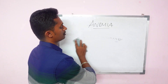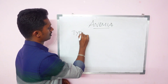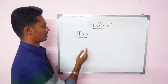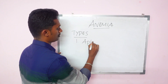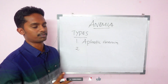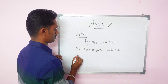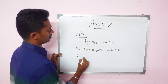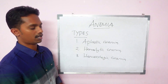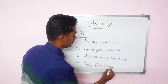So this is what anemia is. Now let's look at the types of anemia. Based on etiology, we can classify anemia. The first major type is Aplastic Anemia, then Hemolytic Anemia, next Hemorrhagic Anemia — which is related to bleeding — and Iron Deficiency Anemia, which you can easily identify by its name.